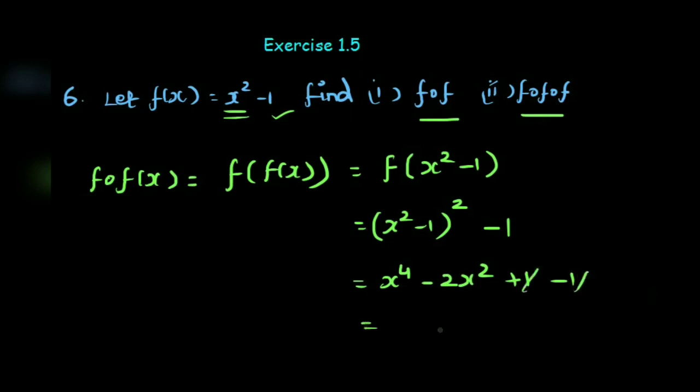So plus 1 minus 1 cancel. What remains is x power 4 minus 2x square. This is the first answer.